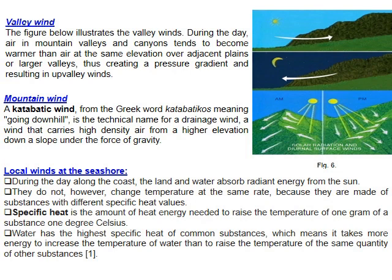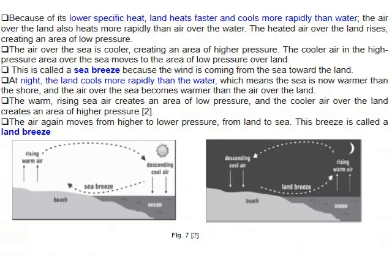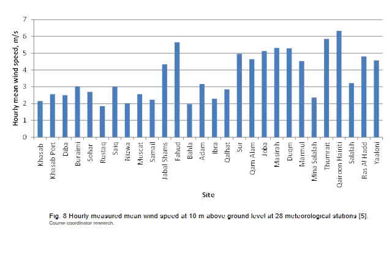The difference in specific heat between water and soil produces sea and land breezes. During the day, air over the land is warmer than air over the water, so cooler air moves from sea to land — called sea breeze. At night, the land cools faster than the water, so the opposite occurs and wind flows from land to sea.